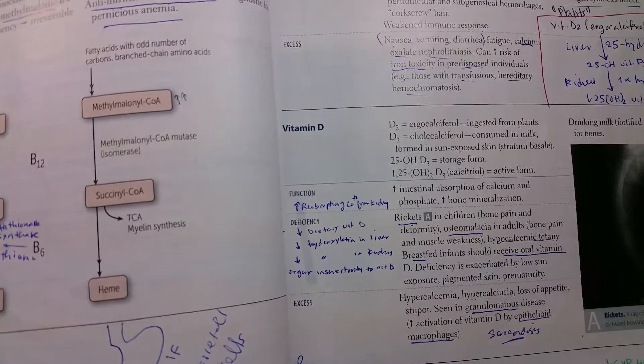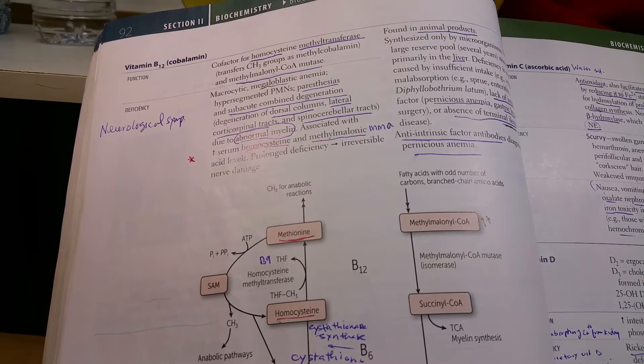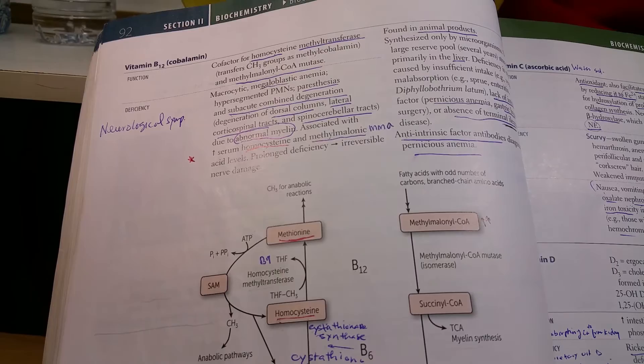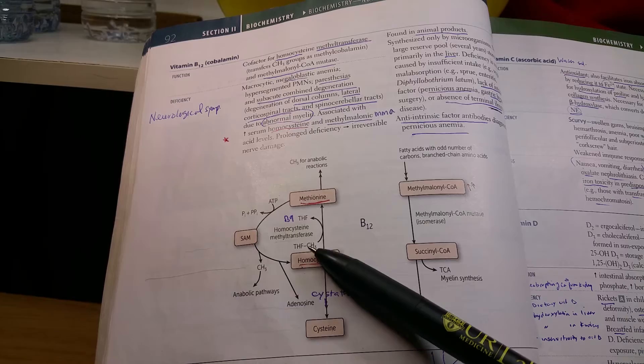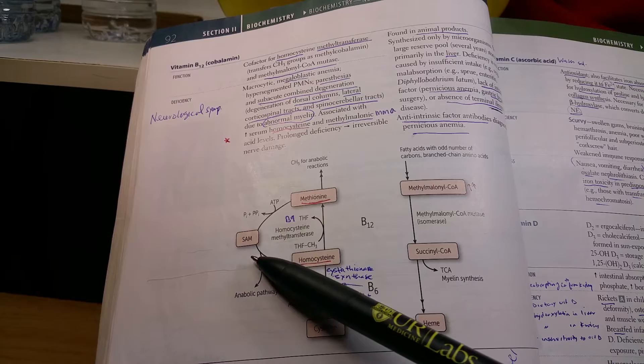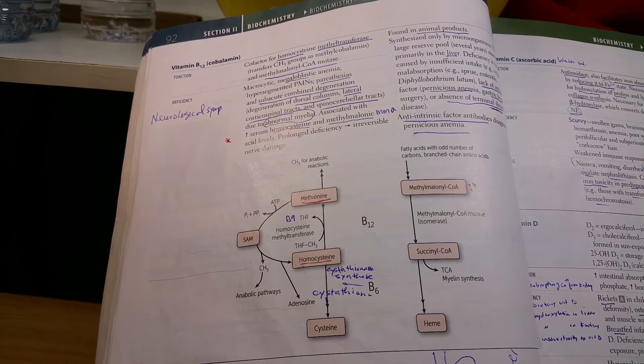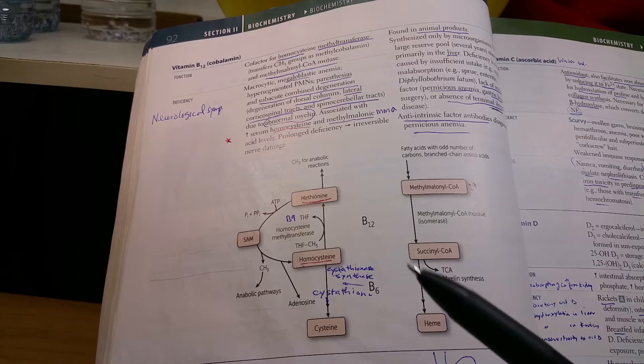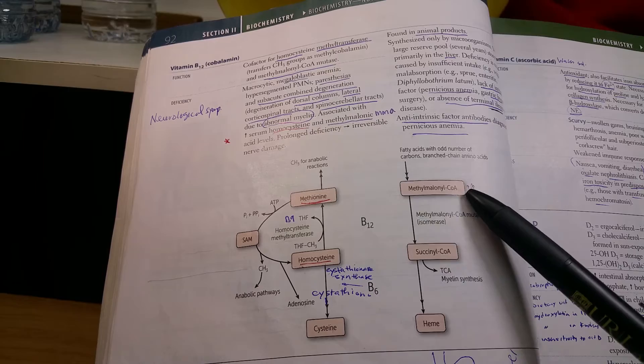You have to contrast this to vitamin B12, or cobalamin. Vitamin B12 converts homocysteine into methionine using tetrahydrofolate and homocysteine methyltransferase for the methyl group. It's very important for conversion of homocysteine to methionine via homocysteine methyltransferase, and methylmalonyl-CoA mutase, which converts methylmalonyl-CoA into succinyl-CoA.